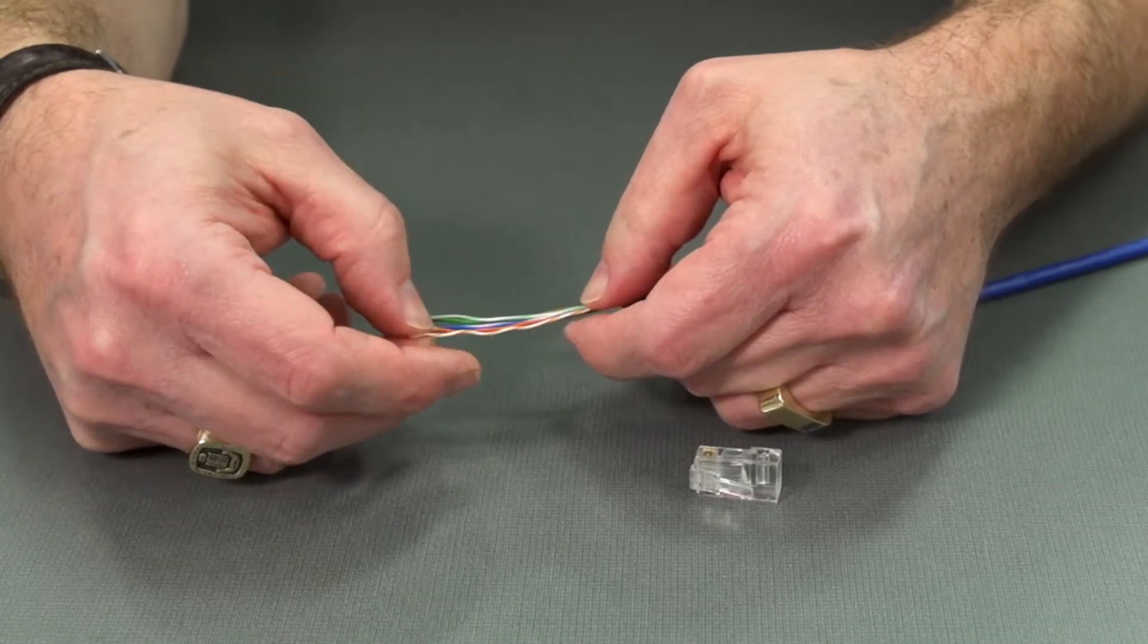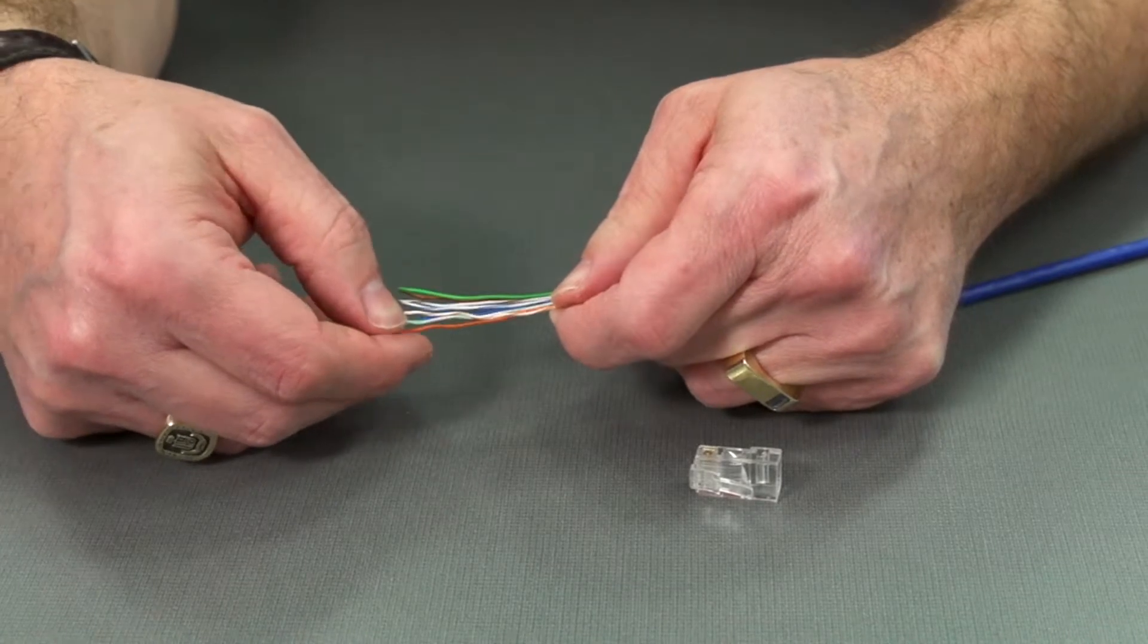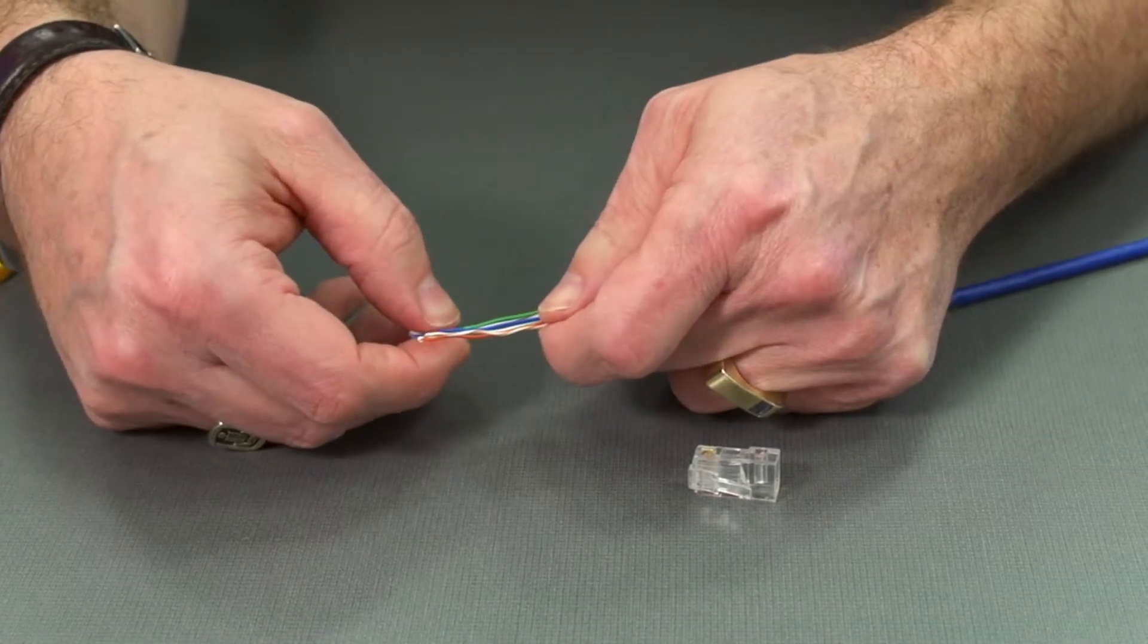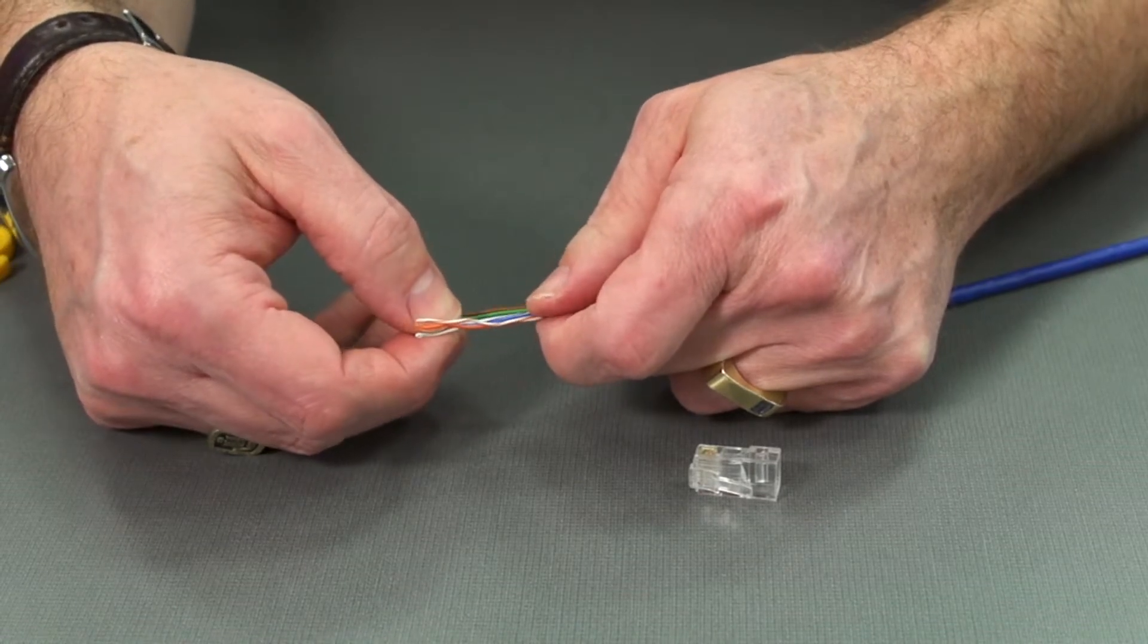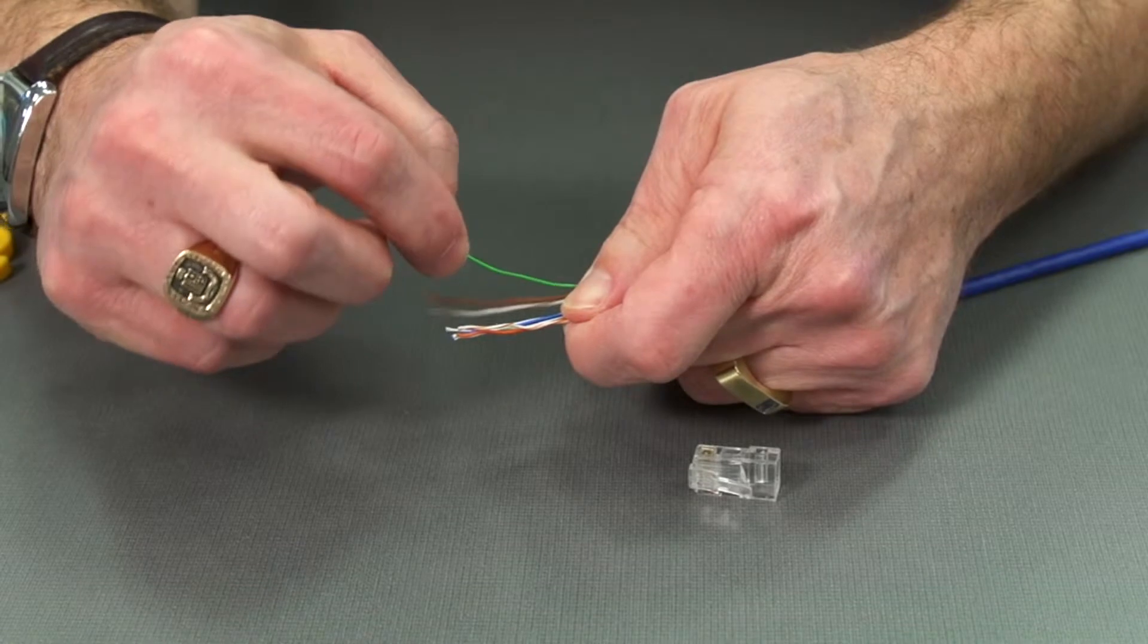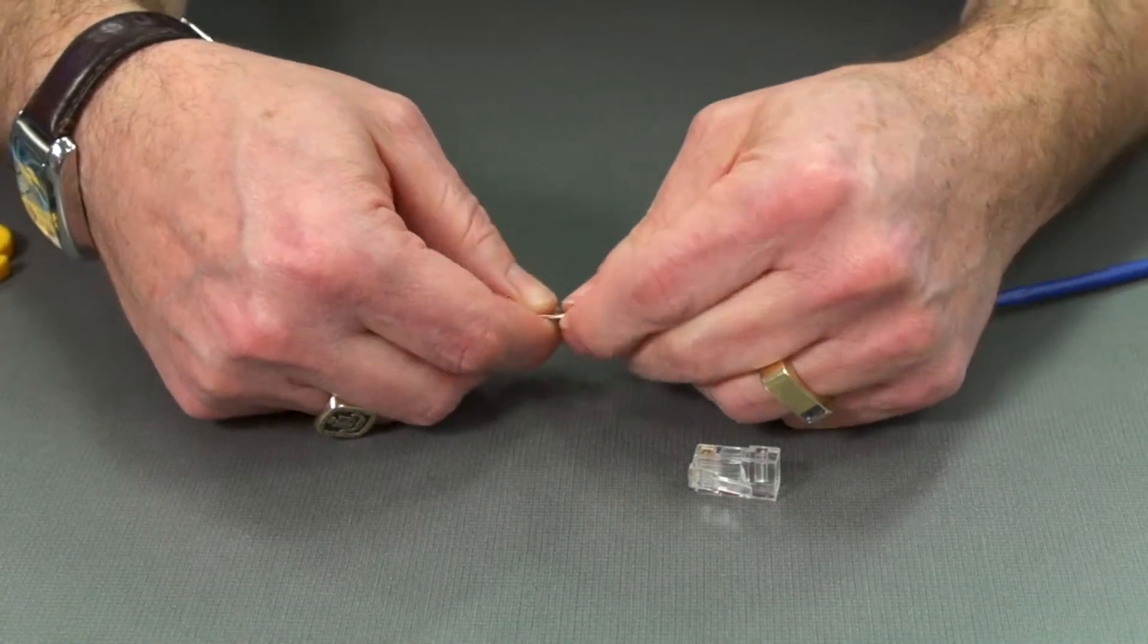So let's just double check that we've got our ribbon still going in the right order. So it's white orange, orange, white green, blue, white blue, green, white brown, brown. So we've got them all in the right order.